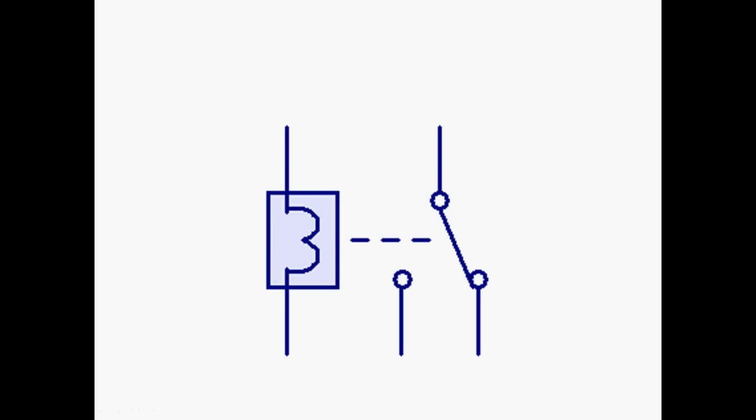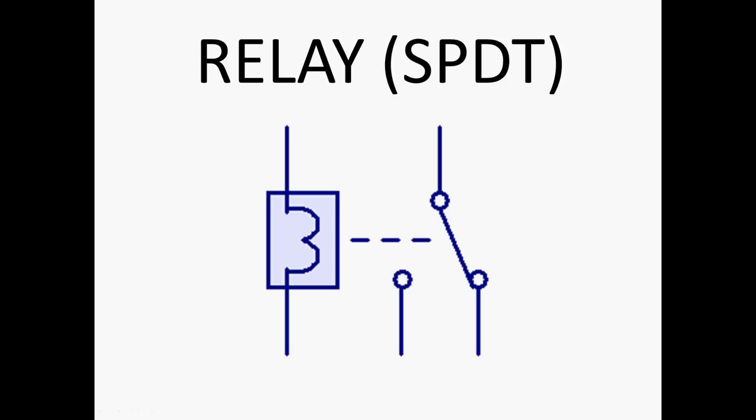We're nearly at the end now. Single pole, double throw relay. So like the name comes from the switch, one pole, two throws. But you've got this little bit which is the magnetic coil of the relay. That little line is supposed to show that when you turn the coil on and make a magnetic field it will pull the switch across. There are your connections: coil, coil, common, normally open, normally closed.